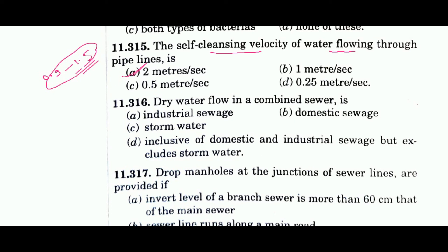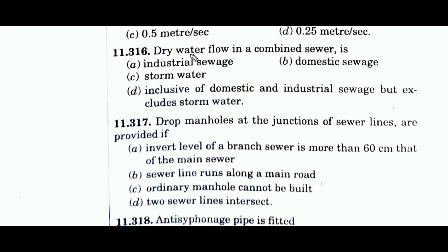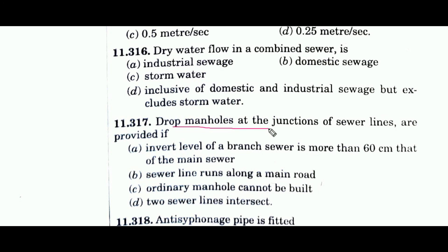Question 316 asks about dry weather flow in a combined sewer. Question 317 asks where a drop manhole is provided. When a branch sewer and main sewer meet at different levels, a drop manhole is provided. If the difference is 60 cm or more, a drop manhole is required. The answer is option A.